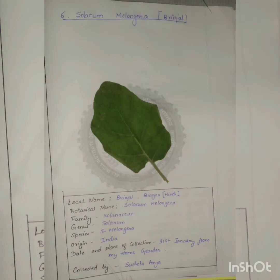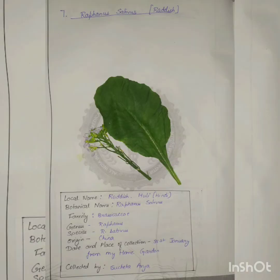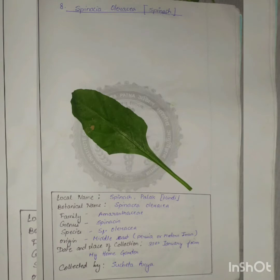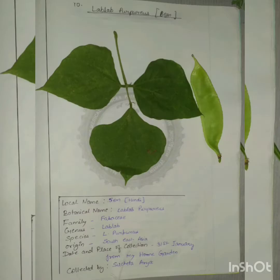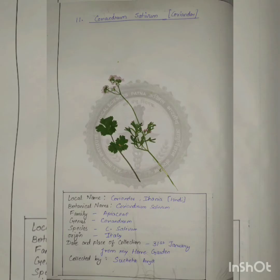Then Raphanus sativus — the leaf of radish — Spinacia oleracea also known as palak, Capsicum annuum which is the chili plant, then Lablab purpureus also known as bean, and Coriandrum sativum known as coriander. Thanks for watching until the end.